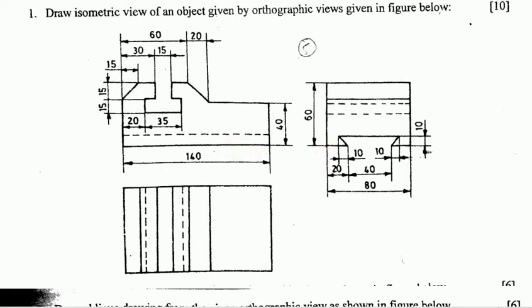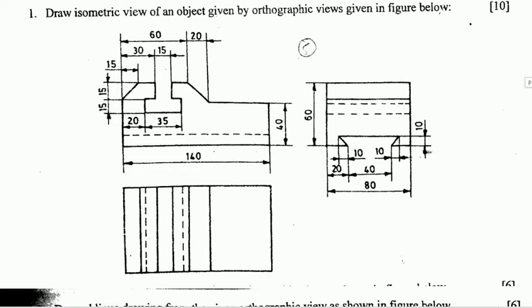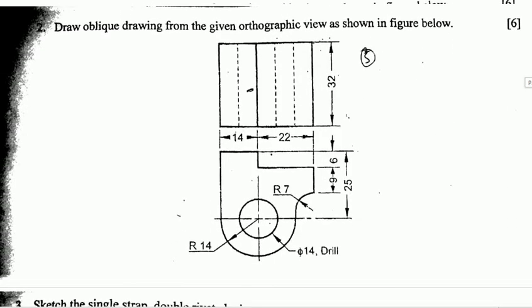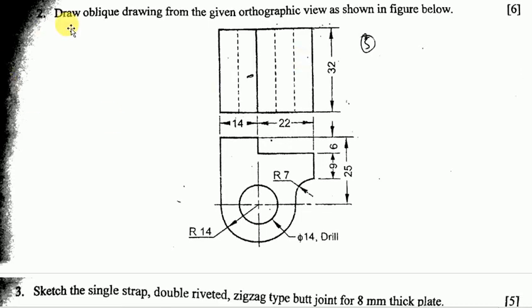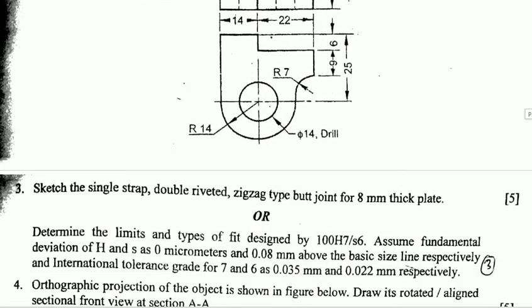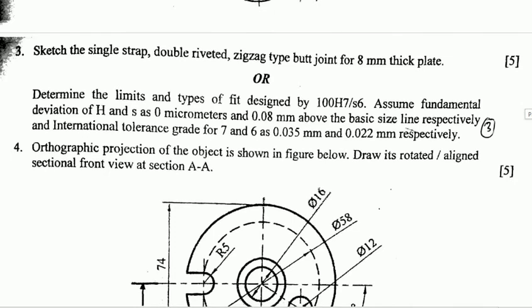Next question. Question number 2: Draw oblique drawing from the given orthographic view as shown in the figure below. This is from Chapter 1. The figure shows the orthographic view with dimensions. It has a radius of 14, diameter 14.